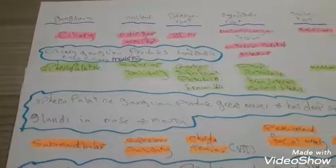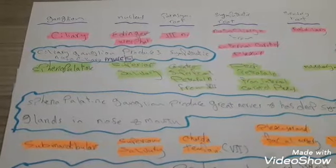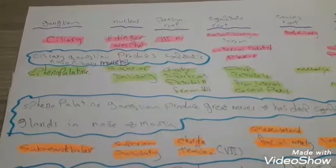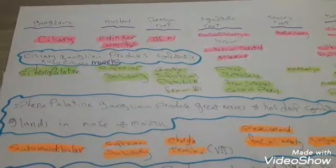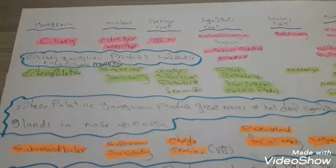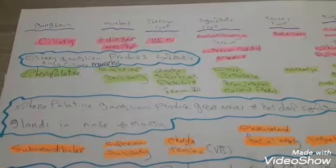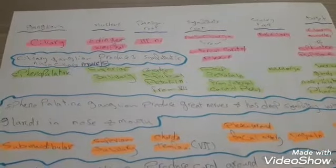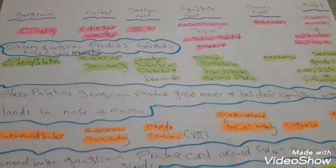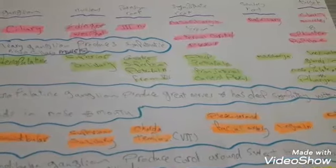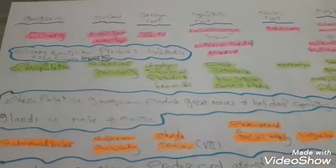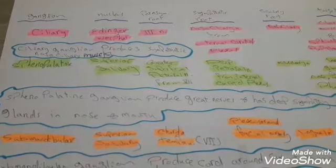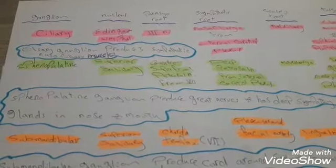The nucleus of the ciliary ganglion is the Edinger-Westphal nucleus. The parasympathetic root is the third cranial nerve. The sympathetic root is the nasociliary nerve from the internal carotid plexus. The sensory root is also the nasociliary nerve. The target is the ciliary muscles and the sphincter pupillae.